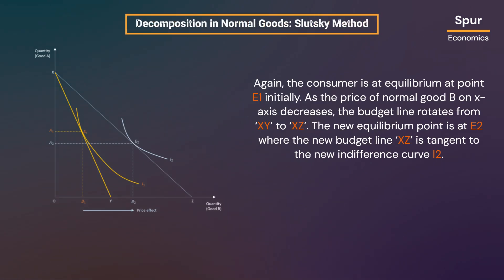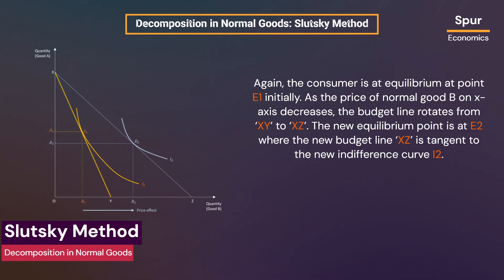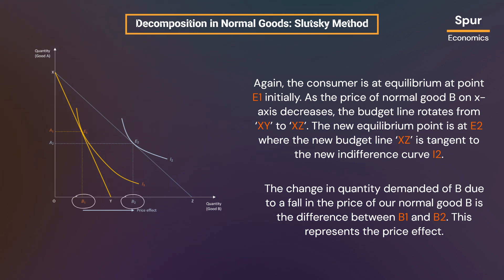Now let us illustrate the Slutsky method of decomposing price effect. Again, the consumer is at equilibrium at point E1 initially. As the price of normal good B on the x-axis decreases, the budget line rotates from XY to XC. The new equilibrium point is at E2 where the new budget line XC is tangent to the new indifference curve I2. The change in quantity demanded of B due to a fall in the price of normal good B is the difference between B1 and B2. This represents the price effect.